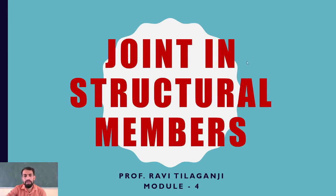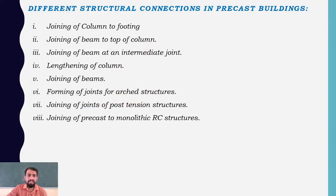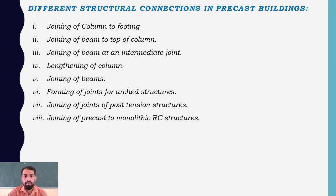In this video, the remaining part of particular joints in structural members will be continued. We have seen up to the particular joints of beams with the intermediate joints. Now we will continue from where we left off, having covered two types of joints: beam on top of column.